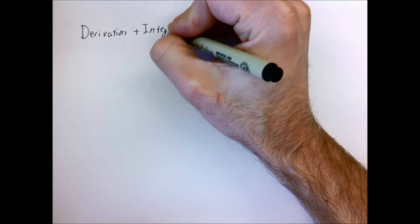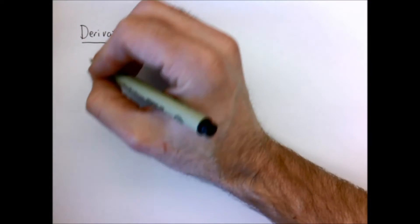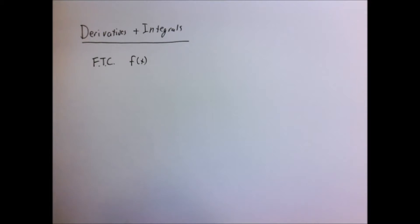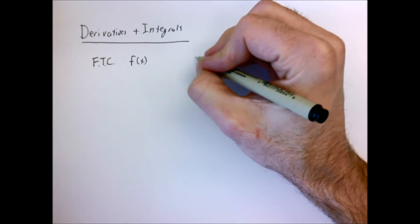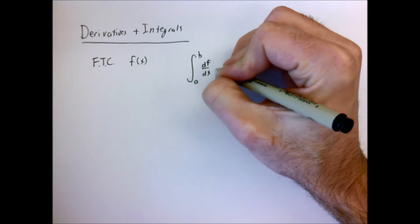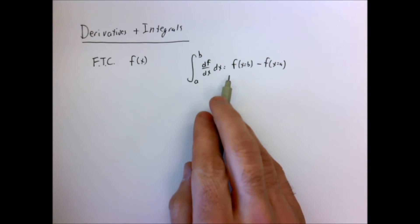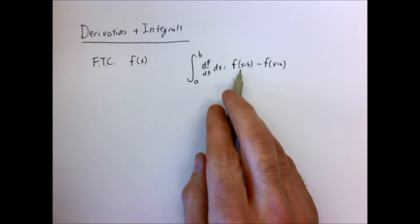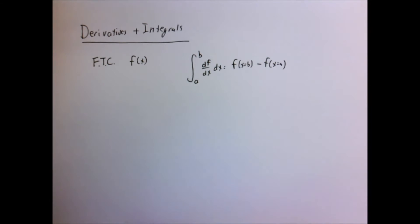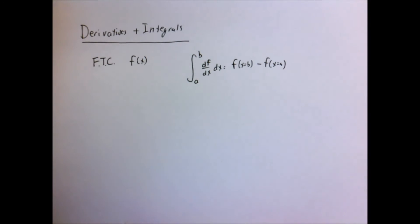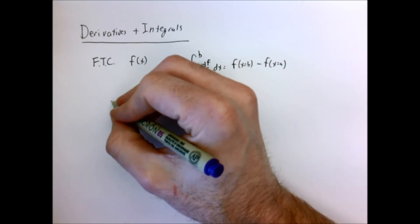We're going to make some connections between derivatives and integrals and prove two useful theorems. First, let's remind ourselves of the fundamental theorem of calculus: if I have some function f(x), integrating the derivative of that function from limits a to b gives me f(b) minus f(a). We take this for granted a lot, but it's very useful. We're going to use it to prove two other connected theorems.